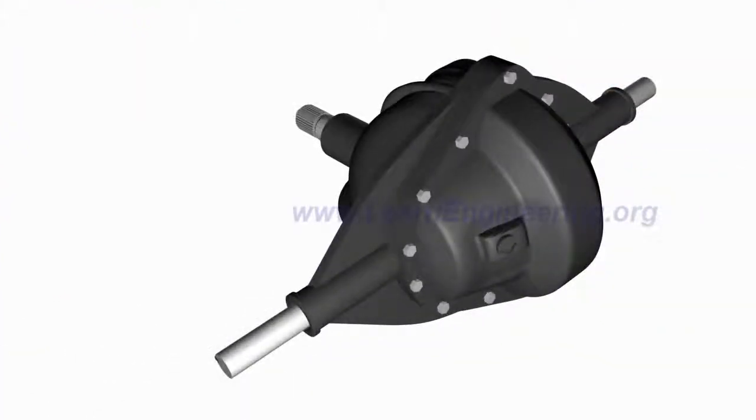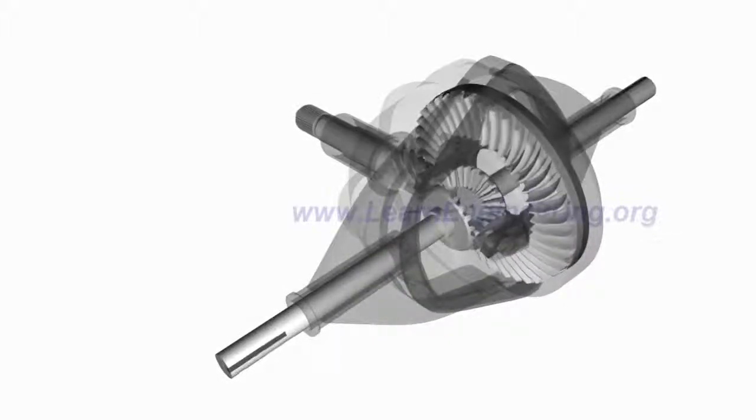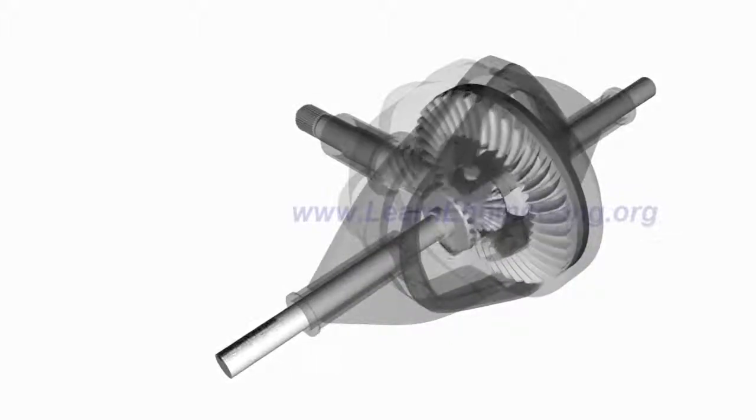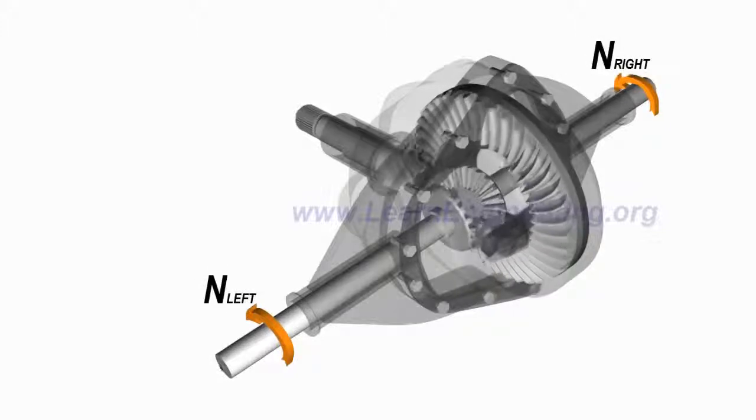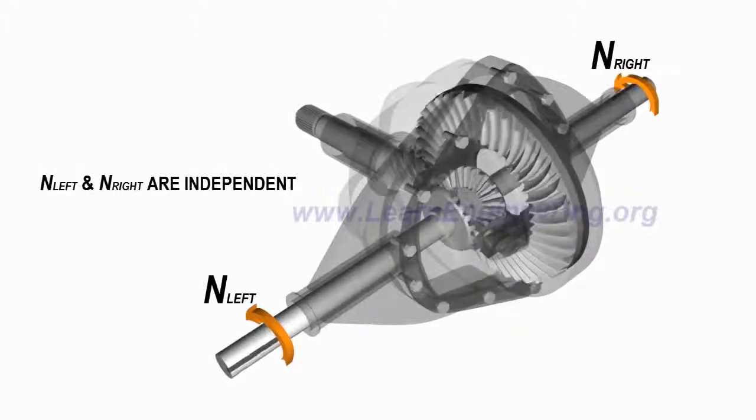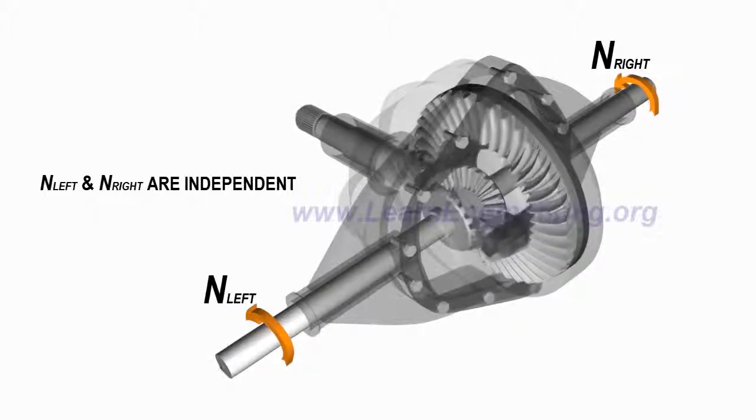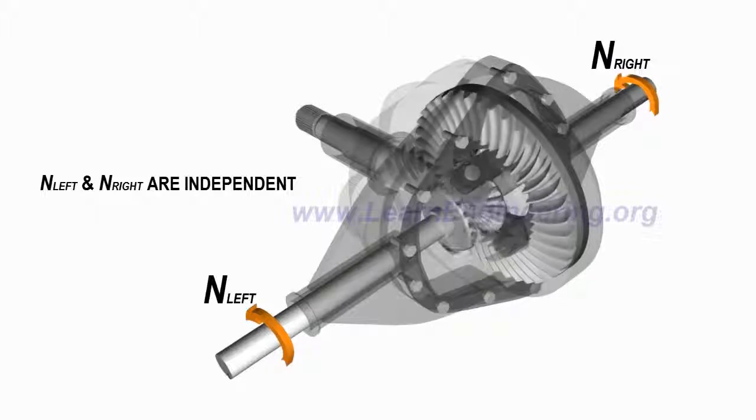The ingenious mechanism in a differential allows left and right wheels to turn at different RPM while transferring power to both wheels. We will learn how differential achieves this in a step-by-step manner using its simplest configuration.